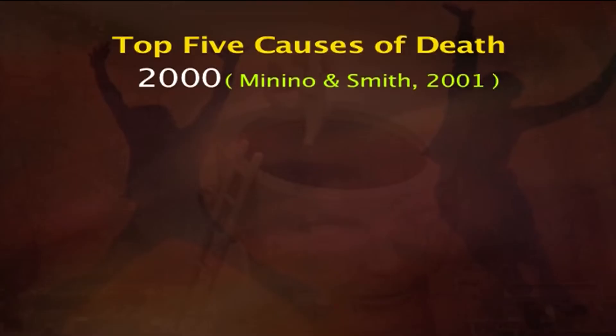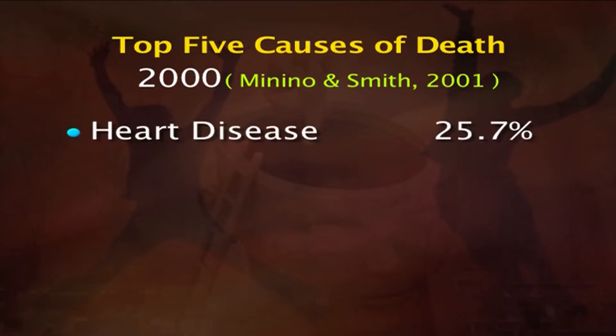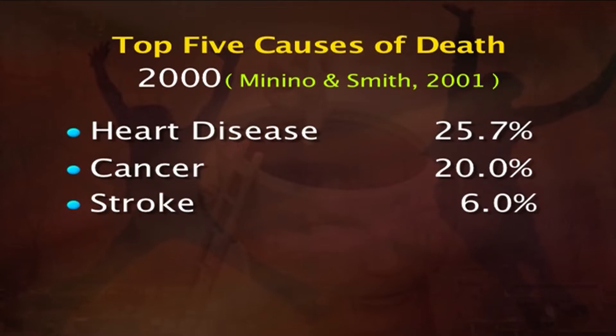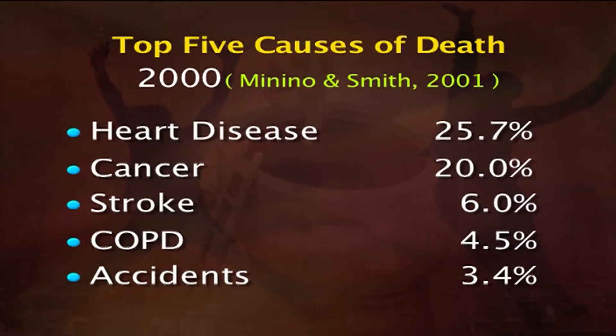Whereas in a recent research study, Minow and Smith found that the top five causes of death in the year 2000 are heart disease, followed by cancer, then stroke and COPD, and finally accidents. So depending on the type of disease the dying patient is suffering from, management certainly varies.